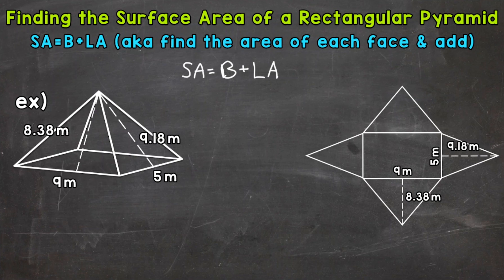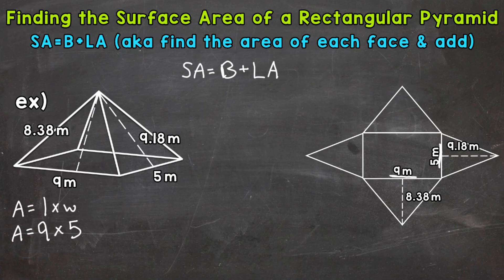I'm going to use the bottom portion of the screen to show all my work. Area equals length times width. Now we plug in — our base has a length of 9 meters and a width of 5 meters, so 9 times 5. If you use 5 for the length and 9 for the width, that works as well. Don't get too held up on which one is length or width, because 9 times 5 is the same as 5 times 9. Both will give you the correct area.